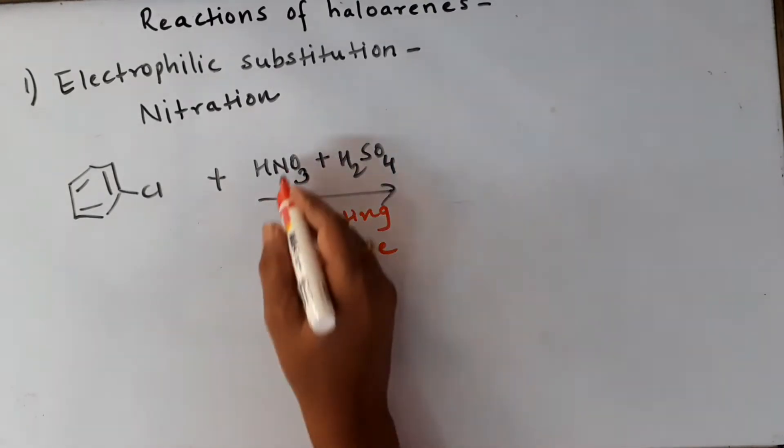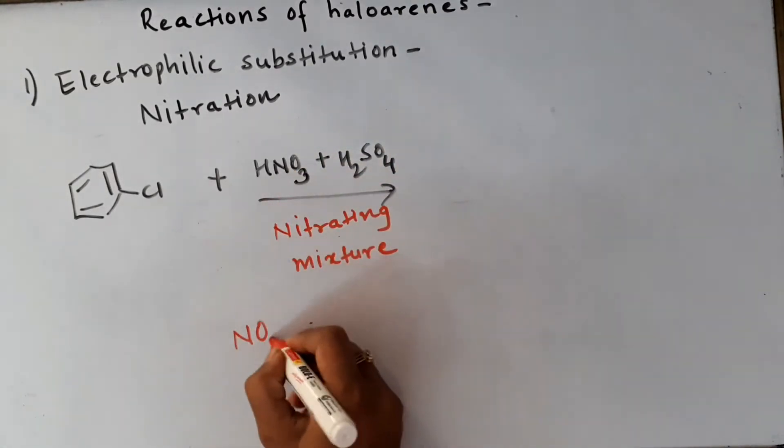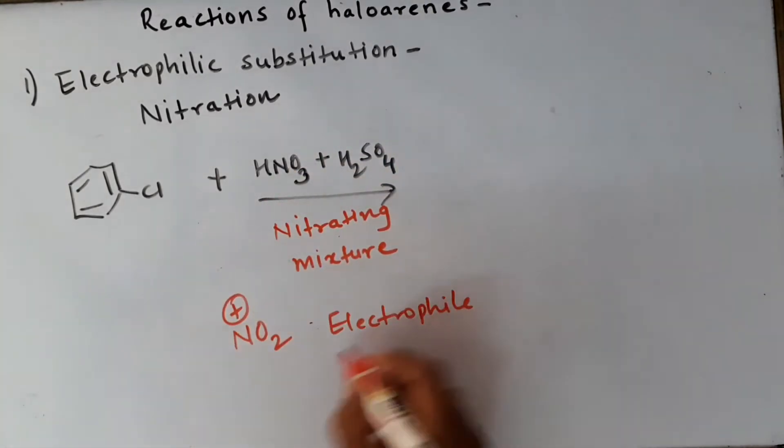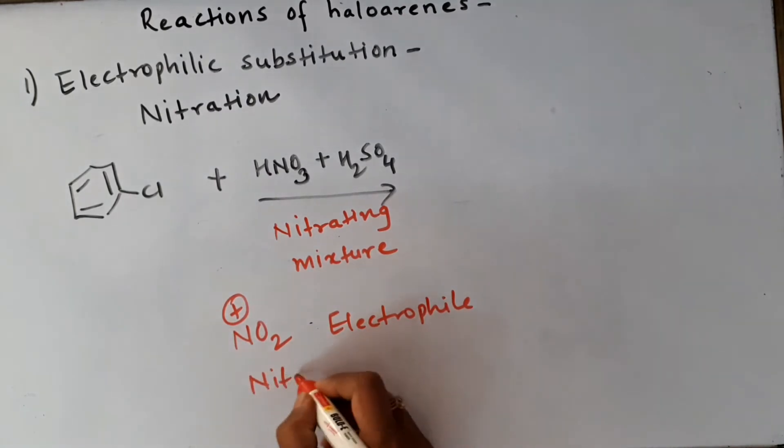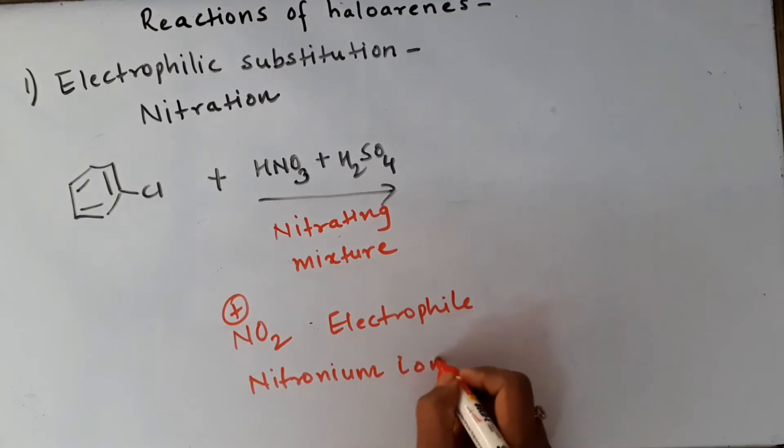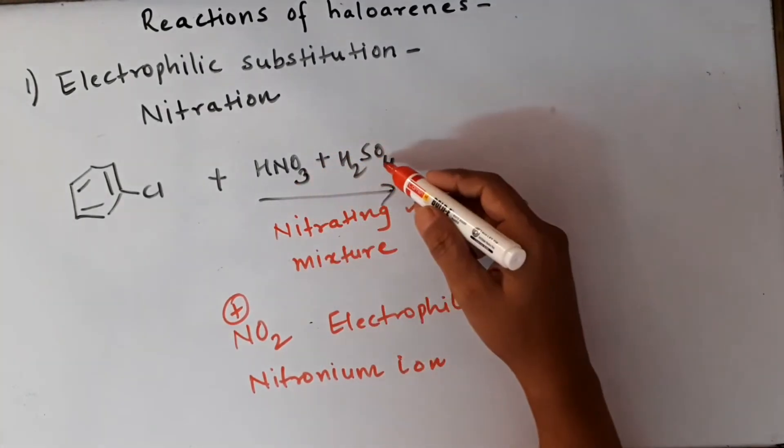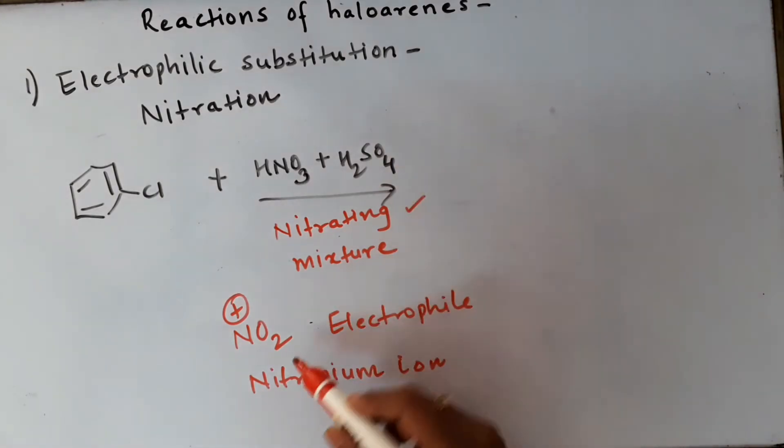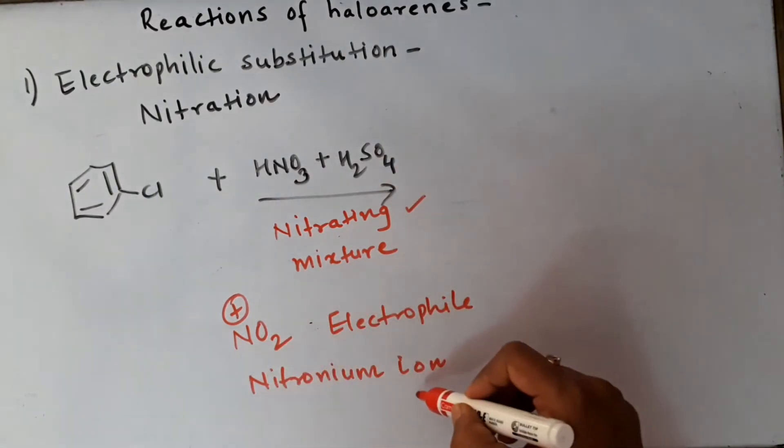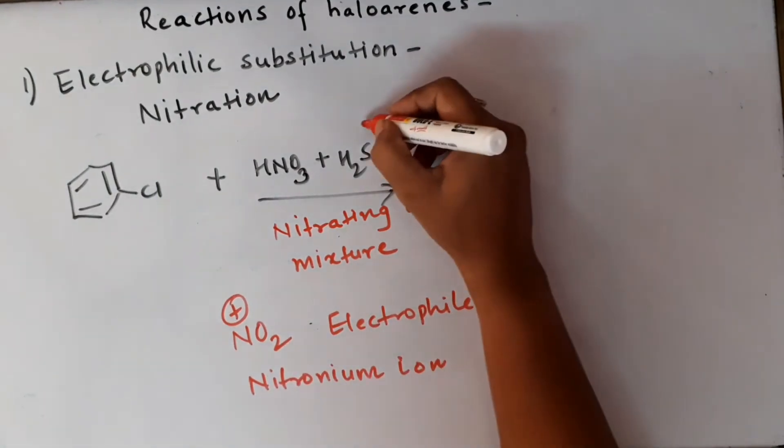Nitrating mixture - what is it? It's a mixture of conc. HNO3 plus conc. H2SO4. The electrophile is NO2+ known as nitronium ion which is generated from nitric acid. So we have three questions: what is nitrating mixture, what is electrophile - NO2+ - its name is nitronium ion.